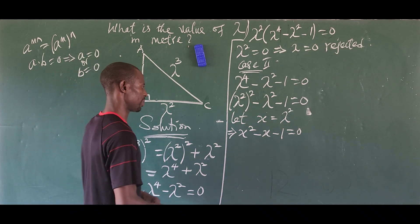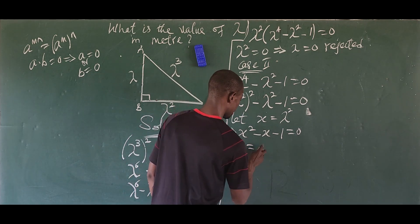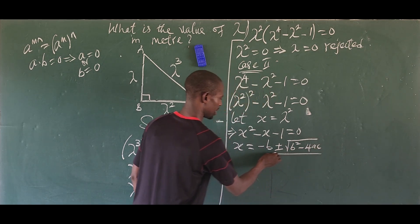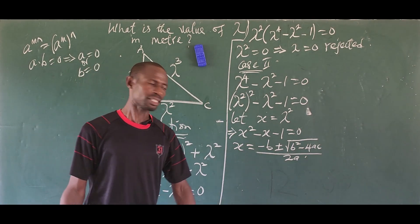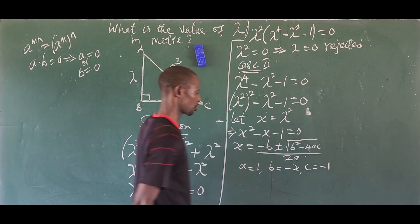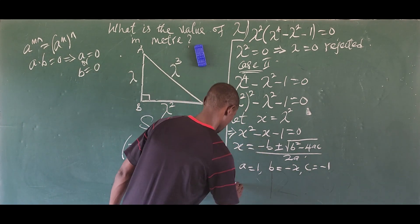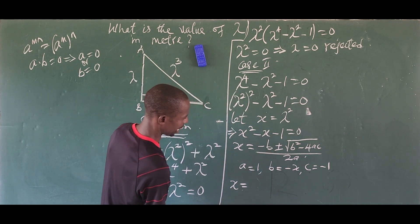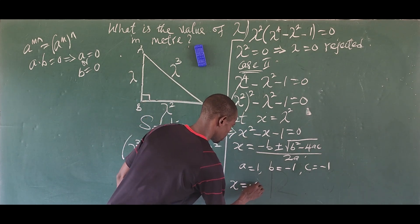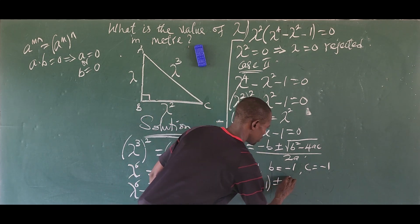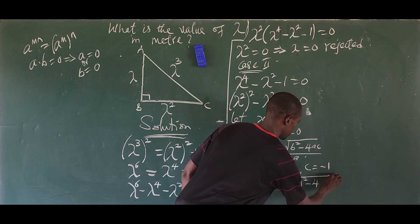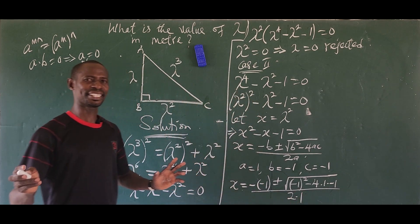Using the quadratic formula: x equals minus b plus or minus the square root of b squared minus 4ac, all over 2a. Here, a equals 1 (coefficient of x squared), b equals minus 1 (coefficient of x), and c equals minus 1 (the constant). Substituting: x equals minus of minus one, plus or minus the square root of minus one squared minus four times one times minus one, all over two times one.